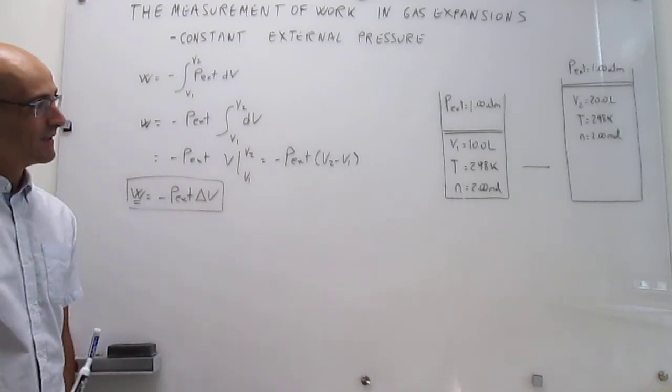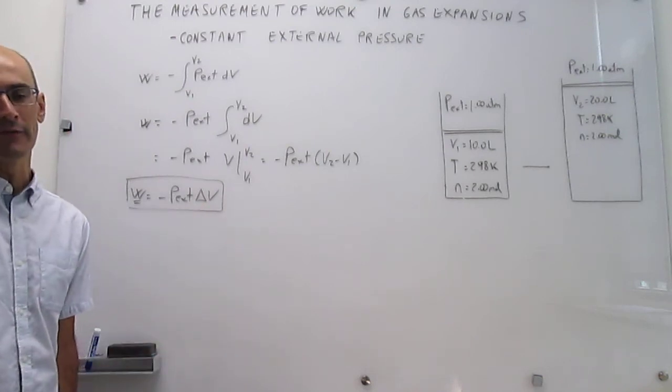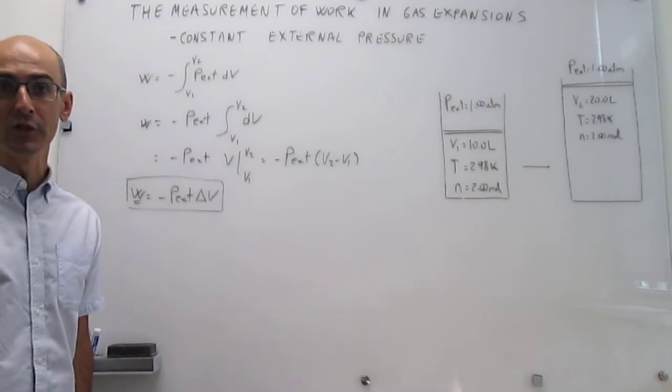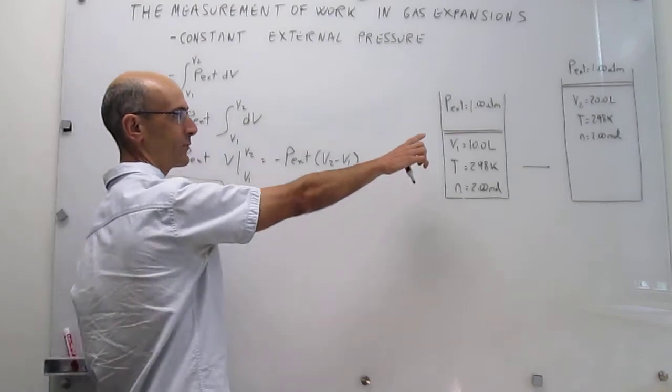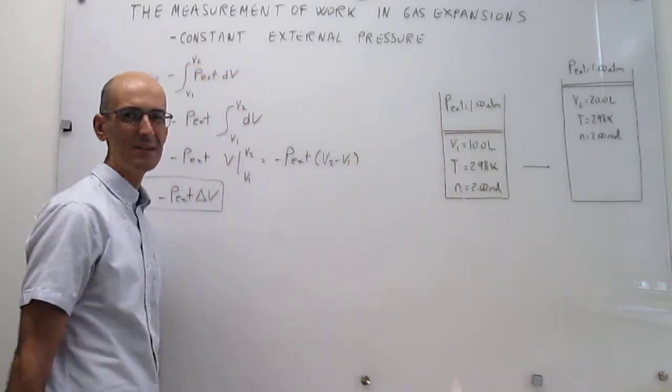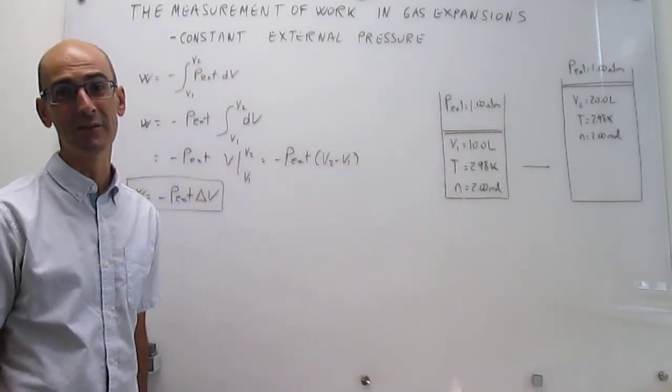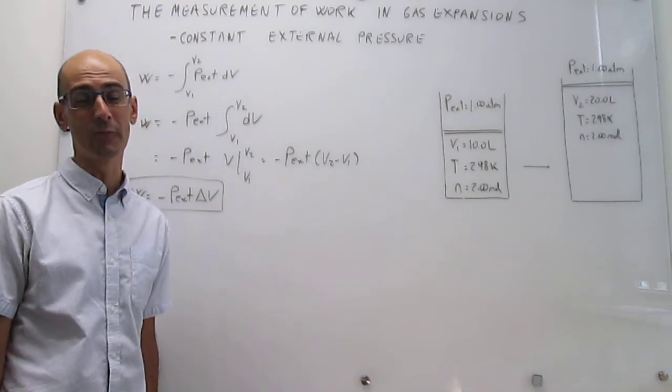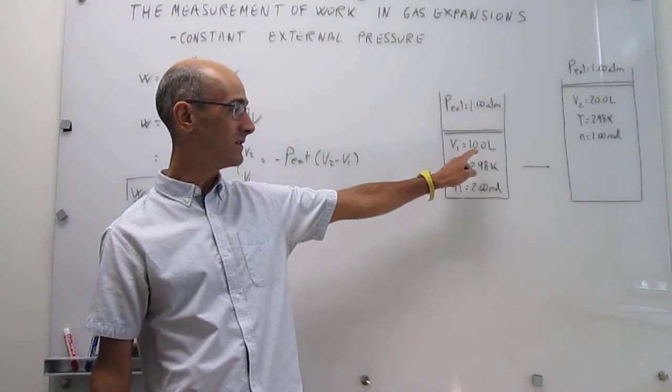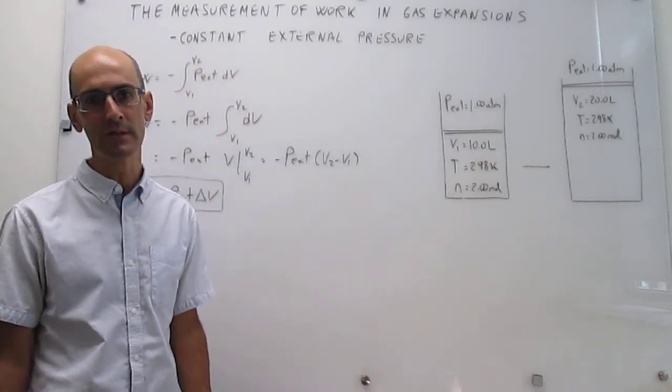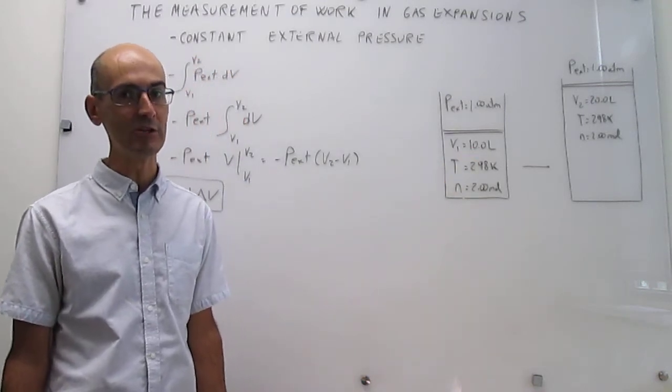In general, it's going to be the case that the data provided in the statement of problems will not be in SI units, and that is the case here. Notice that the external pressure is given in ATMs, but ATM is not the SI unit of pressure. The SI unit of pressure is the Pascal. And at the same time, volume is given in liters, just for convenience, but of course the SI unit of volume is not liters but cubic meters.